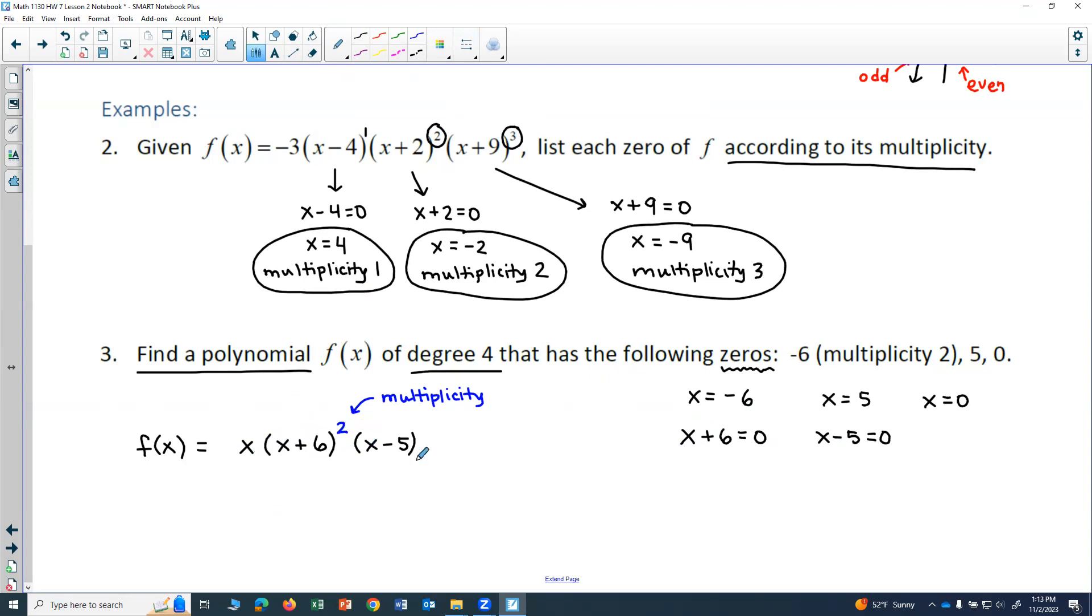x, x squared and x would give me x to the fourth as my leading term. So I have a degree 4 polynomial.